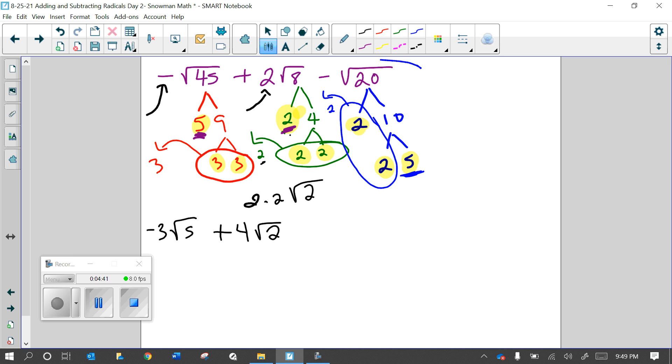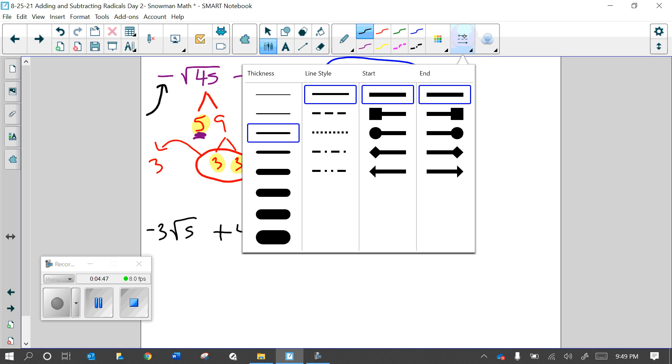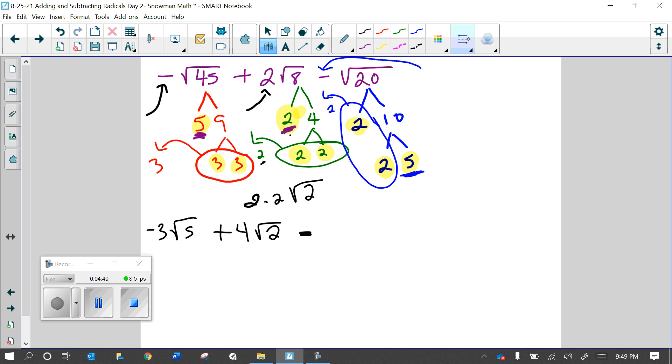So that means a 2 comes out of the radical, and then a 5 stays inside. Okay, don't forget about that negative sign. Bring it down. Negative. And then on the outside, that 2 came out. On the inside, you had the 5.